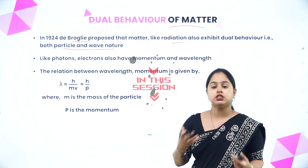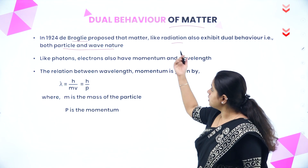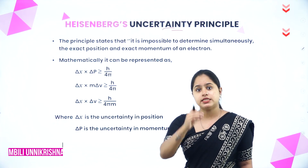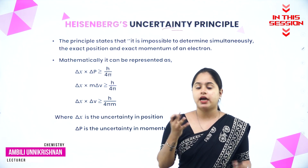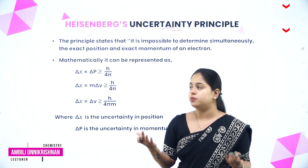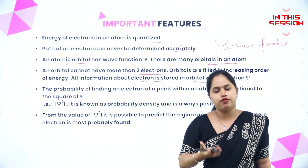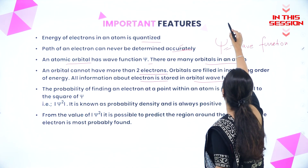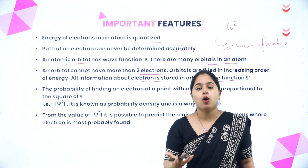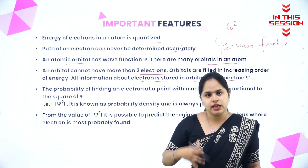Like electromagnetic radiation which exhibits wave and particle nature, matter also exhibits wave and particle nature. For an electron, it is impossible to measure simultaneously the position as well as momentum. Psi is a wave function, and what is of importance is psi square, which gives the probability of finding an electron in a region inside the atom.